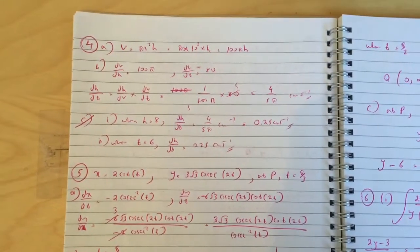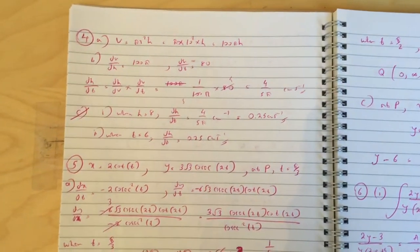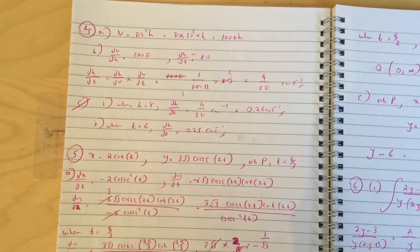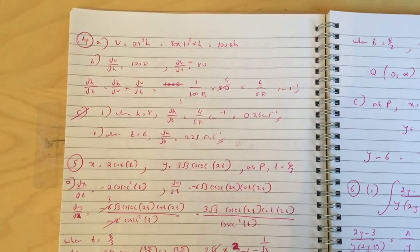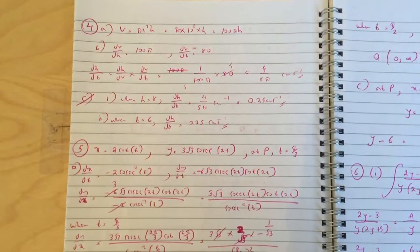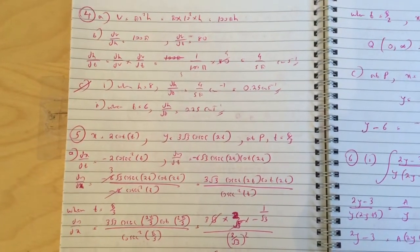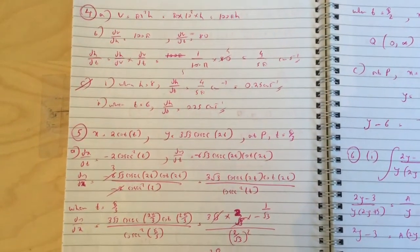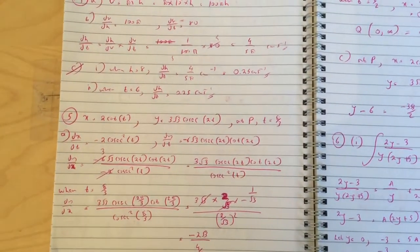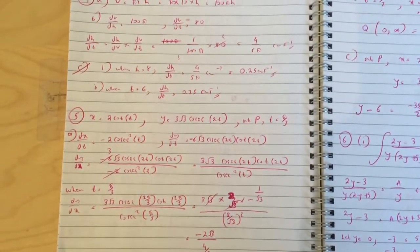Question 4, there were a few errors so I accidentally given so many marks with this question but it doesn't matter. V equals 200 pi H, dV/dH is 100 pi, dV/dt is 80, so dH/dt works out to be 4 over 5 pi. For part B, both parts 1 and 2, the same answer: 0.25 centimeters per second because it's actually constant dV/dt all the way to dH/dt.